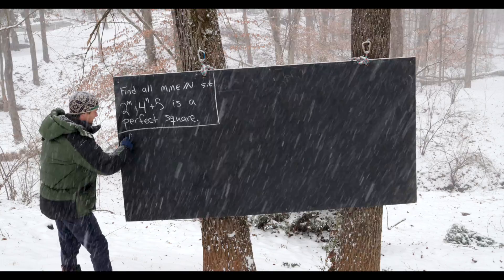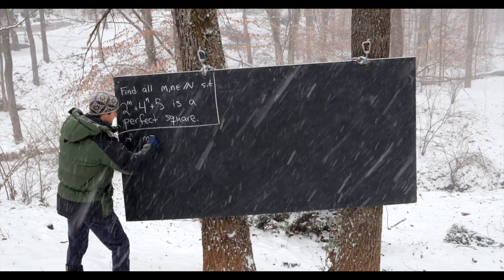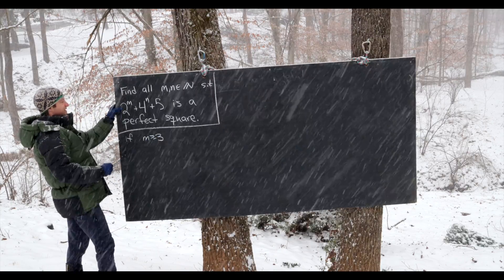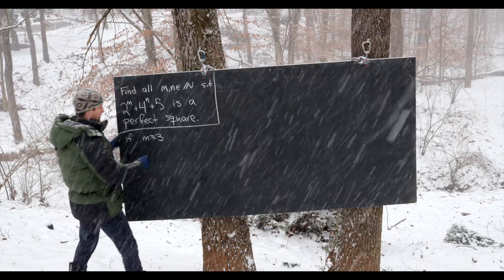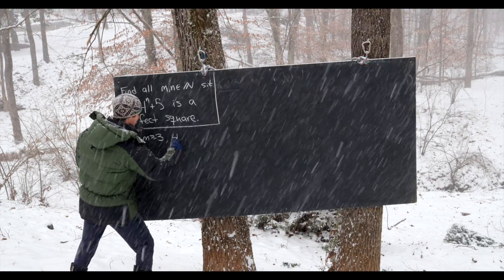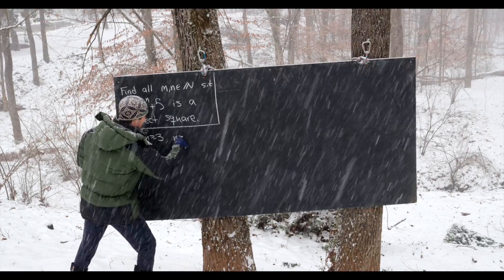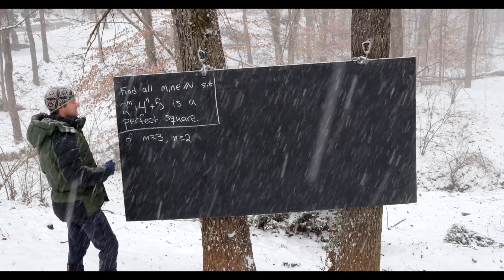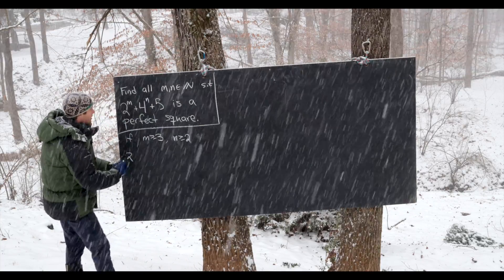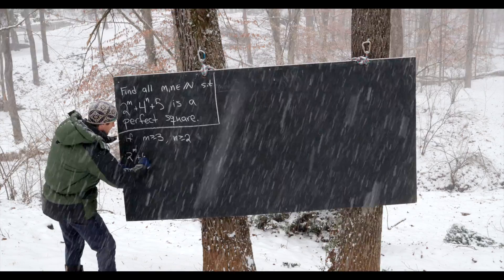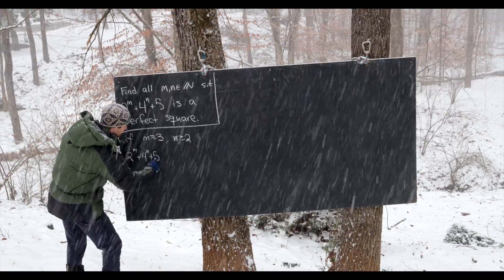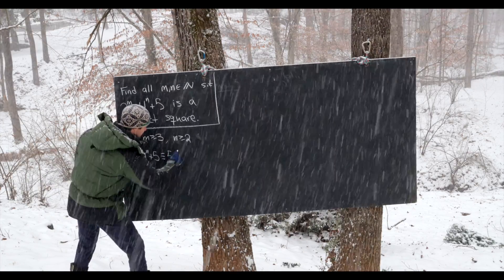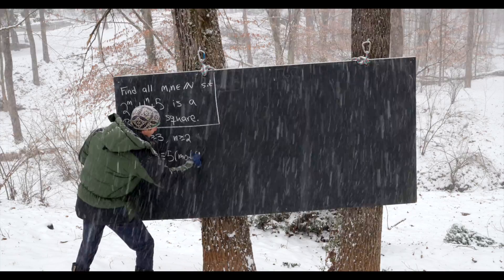So if n is bigger than or equal to 3, then 2 to the m is a multiple of 8. And if n is bigger than or equal to 2, then 4 to the n is a multiple of 8. So we have our object 2 to the m plus 4 to the n plus 5 will be congruent to 5 mod 8.